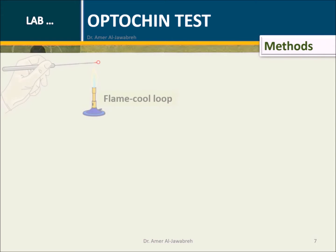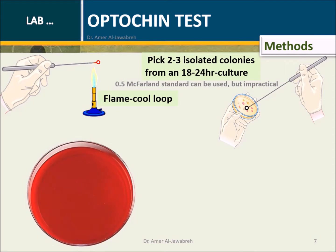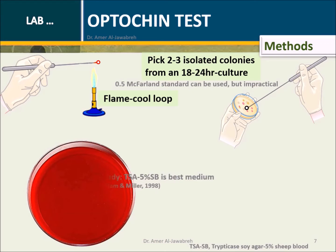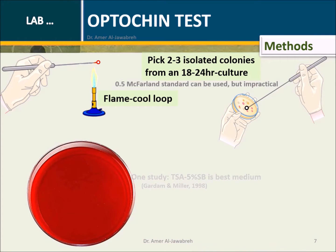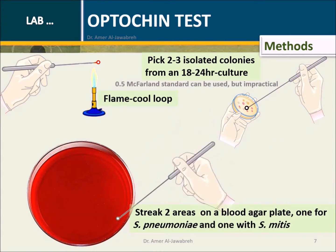Flame and cool the loop. Pick 2–3 isolated colonies from an 18–24 hour culture. An optochin 0.5 microgram standard disc can be used but is impractical. TSA with 5% sheep blood was shown to be the best medium for optochin tests. Streak two areas on blood agar plates — one for S. pneumoniae and one for S. epidermidis.